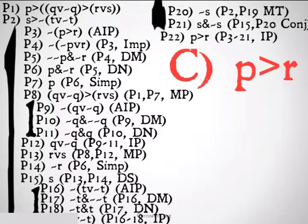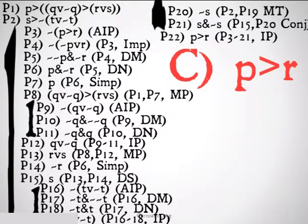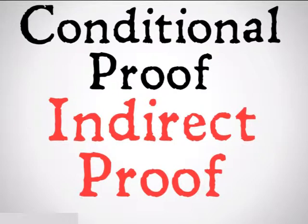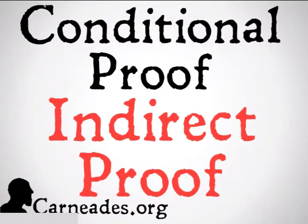That was a lot of work. Here's a challenge for you: this problem can definitely be done with conditional proof, but if you can do this problem using only the 18 rules of inference and not conditional proof or indirect proof, I will definitely feature your answer in a future video, because that would be quite an impressive feat. This has been the final video for propositional logic. Next up, we're going to be looking into categorical logic, the second half of our 100 Days of Logic. Watch a new video every single day for 100 days here at Carnades.org, and stay skeptical, everybody.